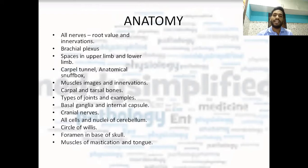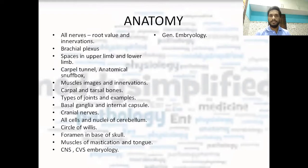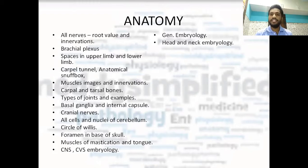Then all the muscles of mastication and tongue are important. And embryology: it is very important to know CVS and CNS embryology. In CNS embryology, the head and neck embryology — that is the pharyngeal arches, pouches, etc. All general embryology is very important: spermatogenesis, oogenesis, and these topics. Head and neck embryology has already been mentioned.